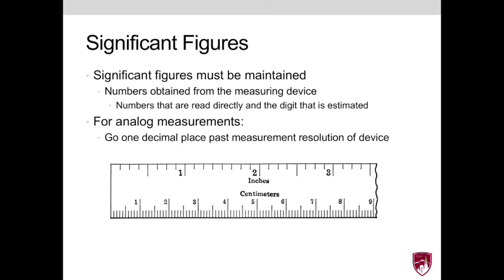For example, the rulers that we use in this lab are accurate to the tenth of a centimeter or a millimeter. So for example, consider this reading, where the red arrow falls between 2.7 and 2.8 centimeters. So therefore, we will report this to three significant figures, or 2.76 centimeters.